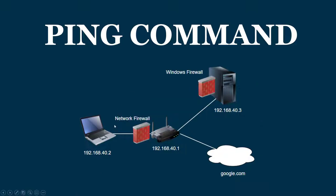Firewalls — both network firewalls and Windows firewalls — can block those requests. If I send a request to 40.3, it goes through my router. The router may receive that ICMP echo request and drop the packet — that could be a network firewall built into a router. It could also be blocked at the endpoint level: a Windows firewall, a Linux server firewall, whatever — it could drop the ICMP echo request right at the host.